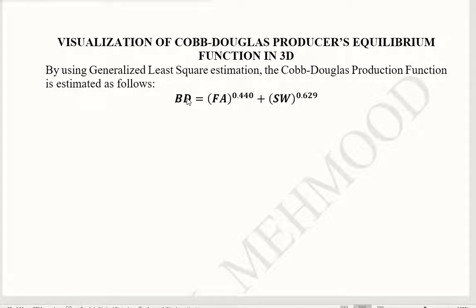And we had a number of banks, the output, the input and the other input. So we are going to plot this Cobb-Douglas production function that we estimated in a 3D space.